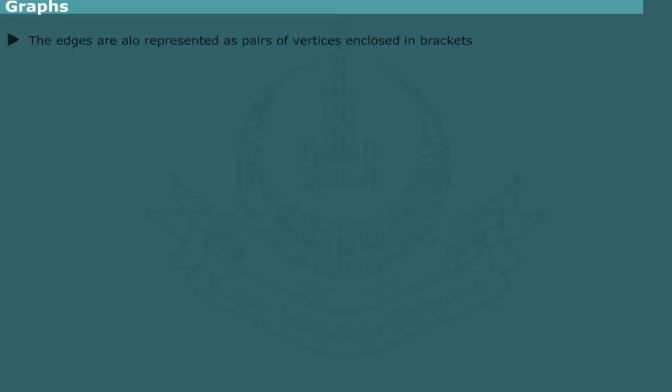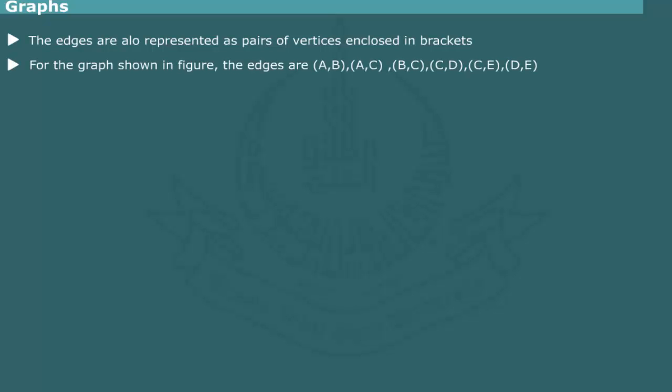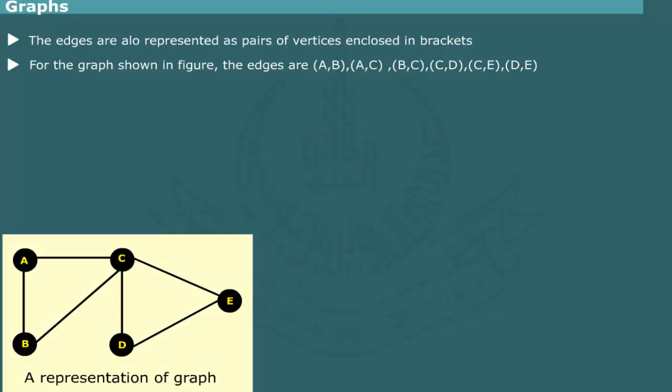Suppose, for example, a graph consists of vertices A, B, C, D, and E with edges AB, AC, BC, CD, CE, DE. Figure shows a diagrammatical representation of this graph.